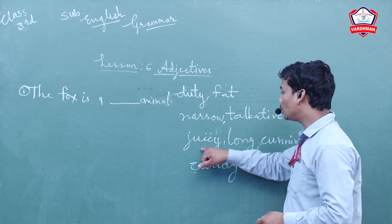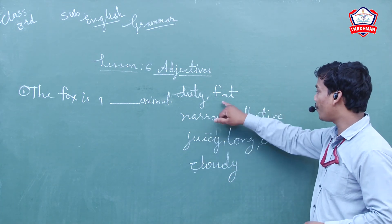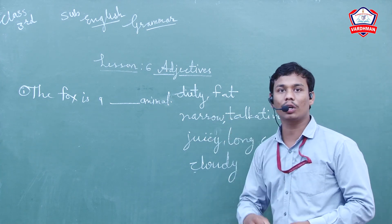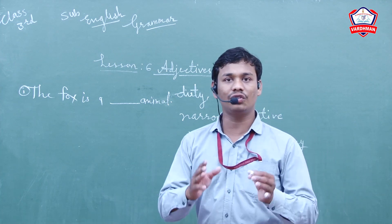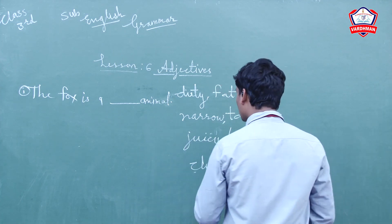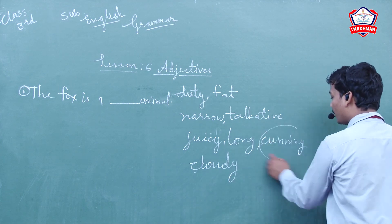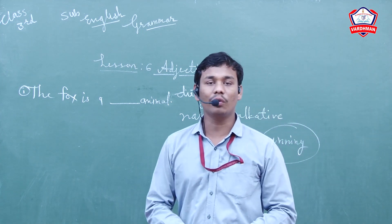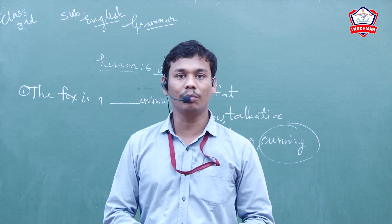So which suitable word will you apply here? You will easily understand which word will suit here. Clear? So, the fox is a cunning animal. It is a clever fox. In this way, you have to write all the exercises given in the book. Clear?